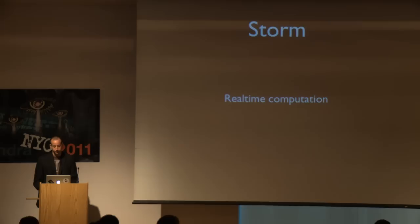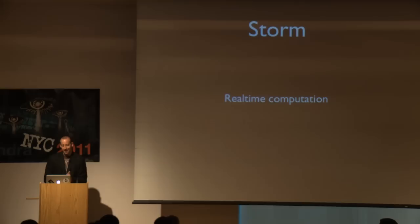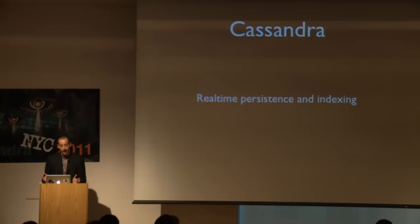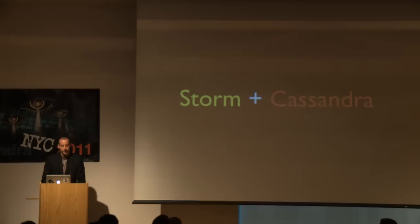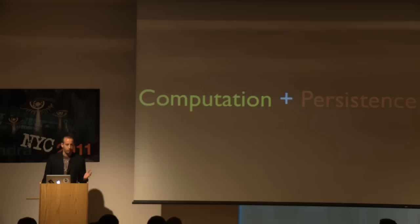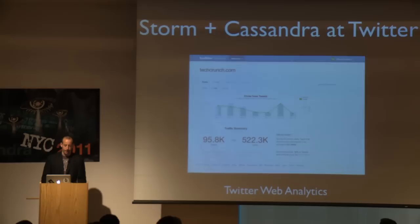Storm is a real-time computation system. I like to say that Storm does for real-time computation what Hadoop did for batch computation. Storm is distributed and fault tolerant. Cassandra is a real-time persistence and indexing system that is also distributed and fault tolerant. Storm and Cassandra work very well together — Storm provides large-scale computation on the fly, and Cassandra provides large-scale persistence and indexing on the fly. We use them together at Twitter, and the main product is Twitter Web Analytics, which tracks analytics on all the clicks happening on Twitter in real-time.